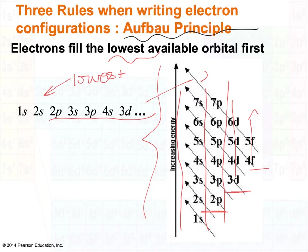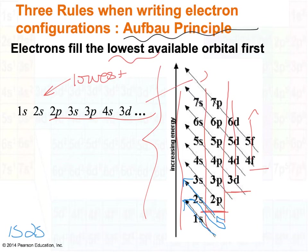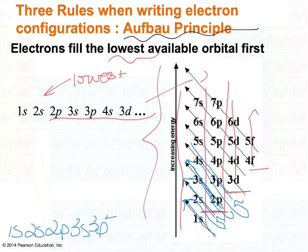The important thing is how to read the Aufbau Diagram — you must read it on the diagonal. Starting at 1s, going diagonally: 1s is the lowest energy. When you finish a diagonal row, go back down to the beginning of the next row. So next in energy is 2s, then 2p and 3s together, then 3p and 4s, then 3d, 4p, and 5s. That last grouping is where it gets tricky and where the diagram is most helpful.